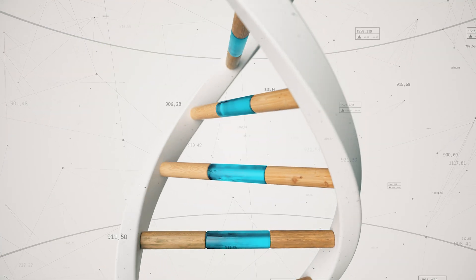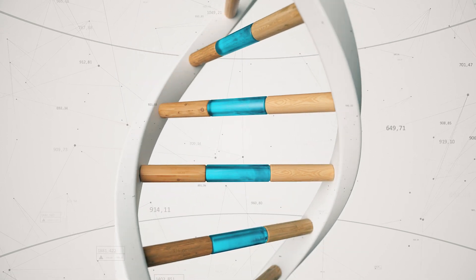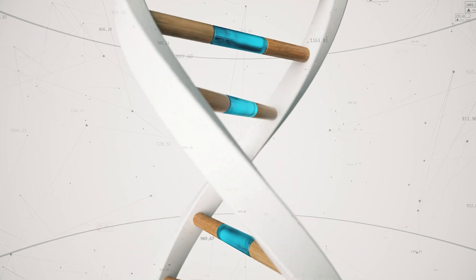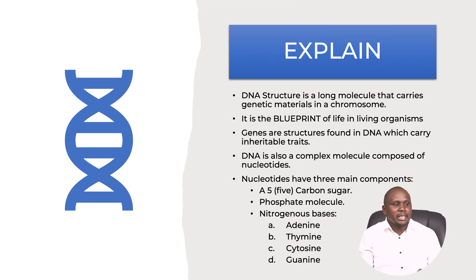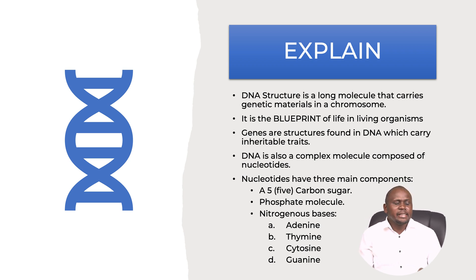That's a short video showing the double helix of DNA — that's how it looks. This is abstract, but this is what normally happens in your body. To narrow down: DNA is a long molecule that carries genetic material in a chromosome. It is the blueprint of life — without DNA, there is no life. Genes are structures found in DNA which carry inheritable traits.